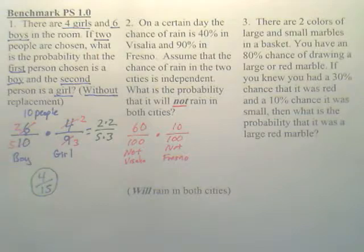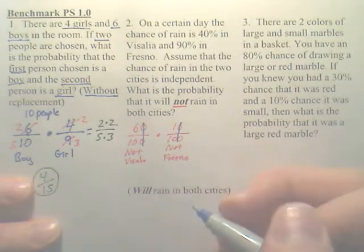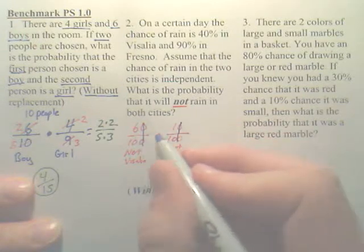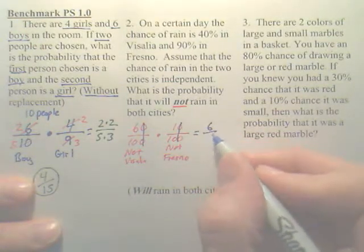Let's simplify this. Can I reduce, cancel these, cancel these? And then it looks like I have six out of a hundred.